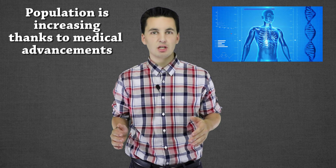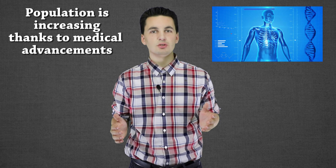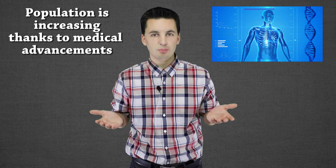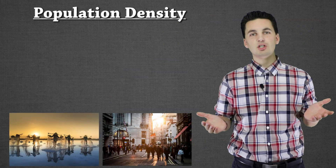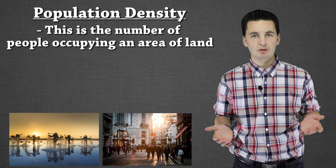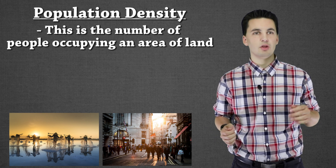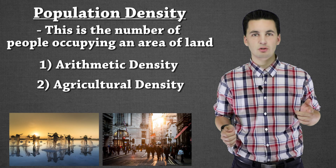With urbanization happening and also an increase in population growth, we need to make sure we're able to handle this new amount of people and figure out where people are living and what we need to provide for them so they can live healthy lives. Population density comes down to how many people are living in an area, and we can break it down into three sections: arithmetic density, agricultural density, and physiological density.